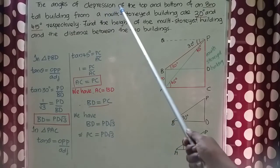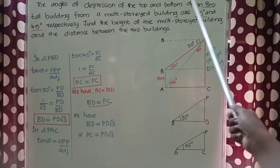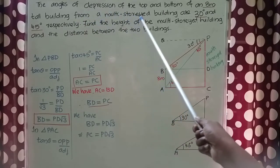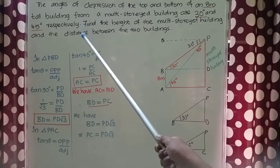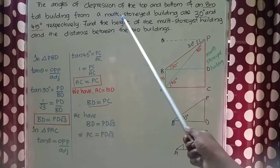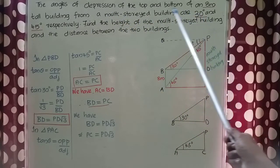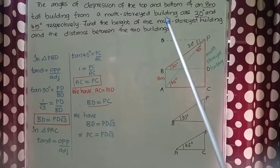Dear students, welcome to Blackboard. The angles of depression of the top and bottom of an 8 meter tall building from a multi-storied building are 30 degrees and 45 degrees respectively. Find the height of the multi-storied building and the distance between the two buildings.